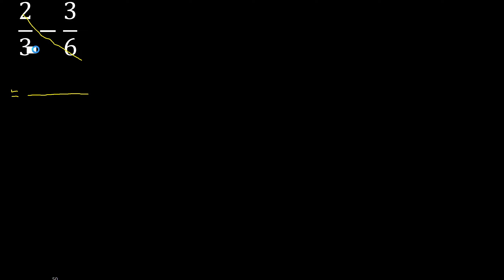First, multiply like this: 6 multiplied by 2 is 12, minus 3 multiplied by 3 is 9. Then 3 multiplied by 6 is 18.